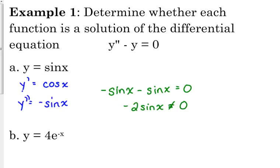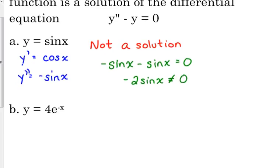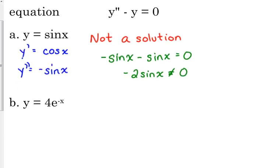So the function y equals sine of x is not a solution to that differential equation. Let's see if this exponential function is: y equals 4e to the negative x. Let's see if that satisfies this differential equation. For the first derivative, the 4 is just a constant multiple. The derivative of e to the negative x is e to the negative x times the derivative of the exponent.